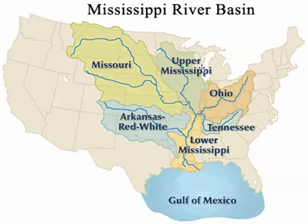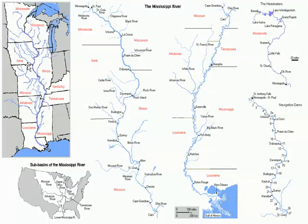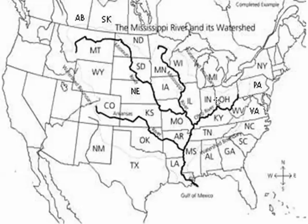The huge water basin coming from the Mississippi included the Missouri Basin, the Arkansas, the Red and White Rivers, the lower Mississippi, the Tennessee River, and the Ohio River. Thomas Jefferson was very well aware of these river systems in the Gulf of Mexico and how they would help the western part of the United States. Jefferson really wanted to get access to the port of New Orleans at the Delta, where the Mississippi emptied out, to help with trade and commerce. These rivers are crucially important for United States trade in the west.